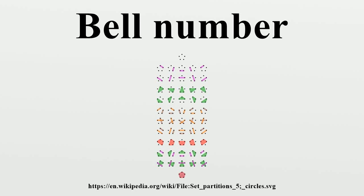In combinatorial mathematics, the Bell numbers count the number of partitions of a set. These numbers have been studied by mathematicians since the 19th century, and their roots go back to medieval Japan. They are named after Eric Temple Bell, who wrote about them in the 1930s.